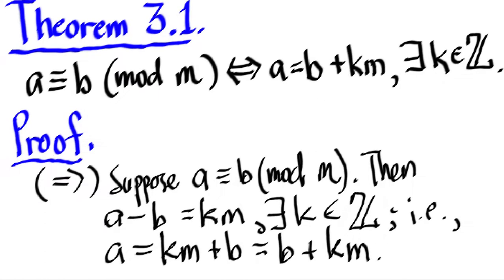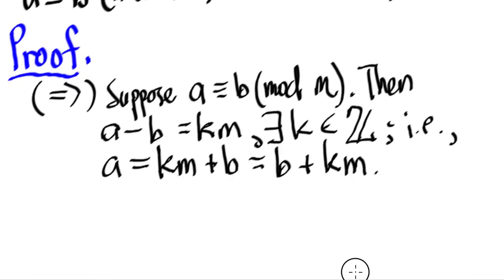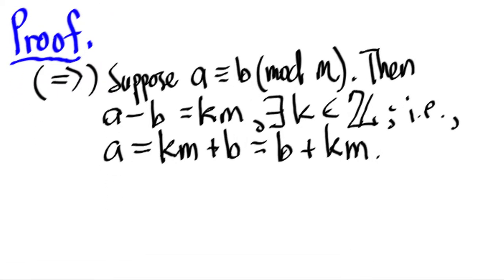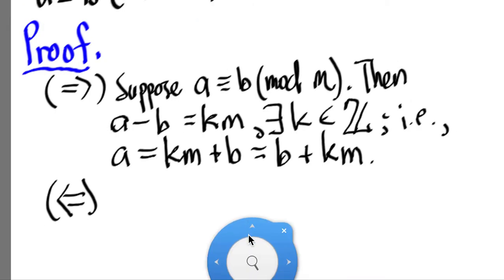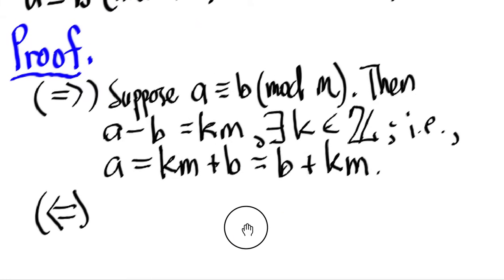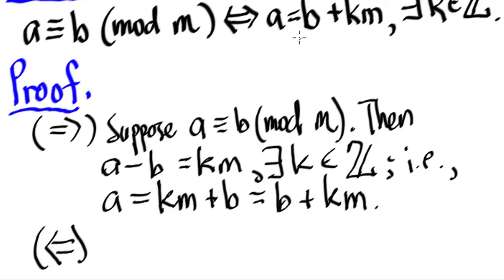That's the one that we want to show. Now, for the if part. This is only if, so this is the if part. Now, going back to the proof, we want to now show from here it will go here.